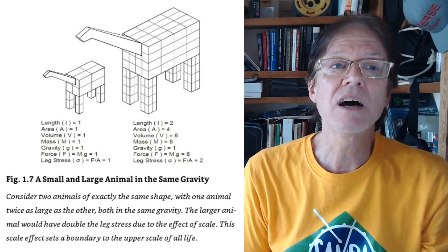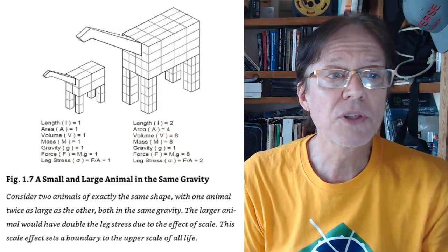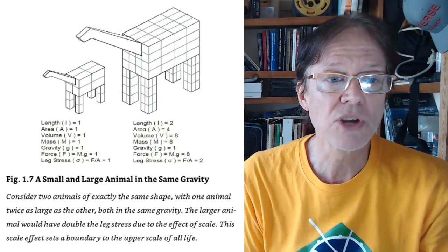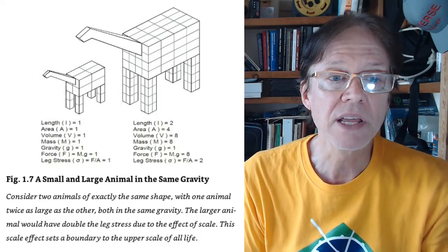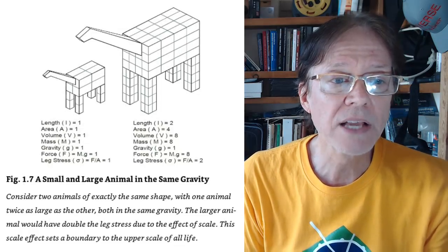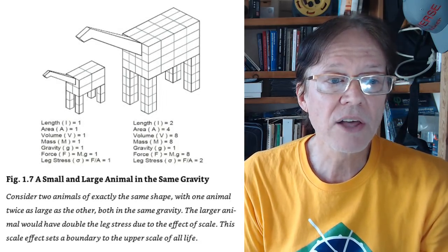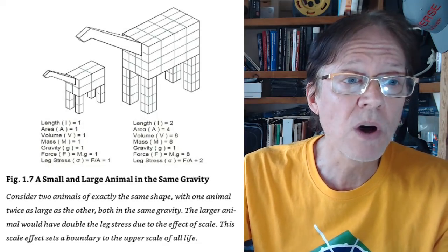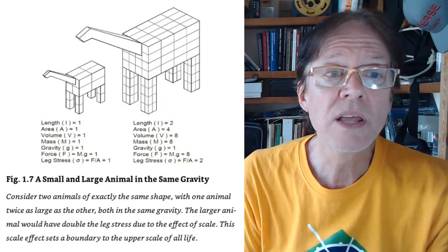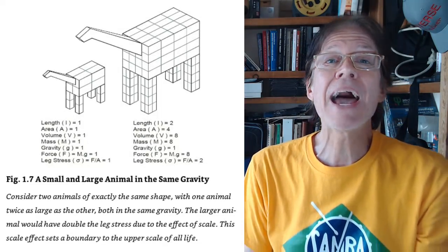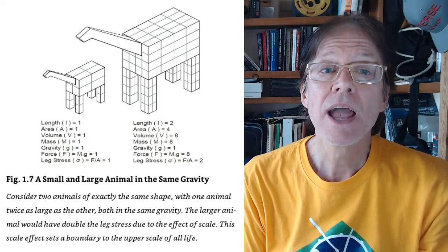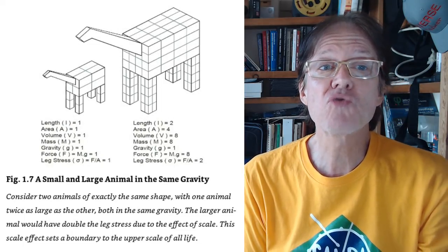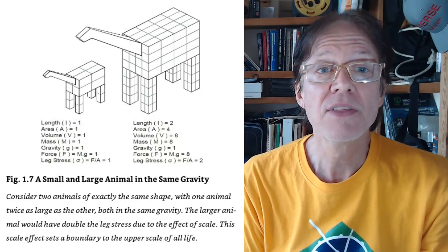He took this idea of the cube and started looking at animals. So if you look at this, you have basically a small and a large animal in the same gravity. Consider two animals of exactly the same shape, one animal twice as large as the other, both in the same gravity. The larger animal would have double the leg stress due to the effect of scale. The scale effect sets a boundary to the upper scale of life. So in this case, the length is one. You can see the length is two. The area is one, the area then goes to four. The mass is one, the mass goes to eight. And what makes things heavy? What does gravity act upon? Mass. So the stress levels on things becomes much greater than just two times.